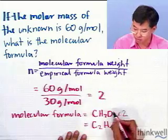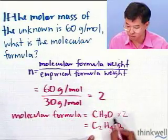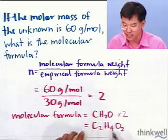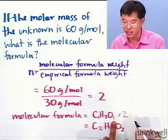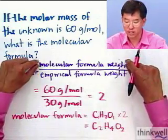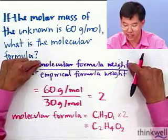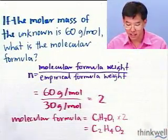This 2 is multiplying the coefficients. In other words, C1H2O1, and then each one of these times 2 because the molecular formula weight was twice what the empirical formula weight was. So we've actually gotten as far as a molecular formula for our unknown compound.